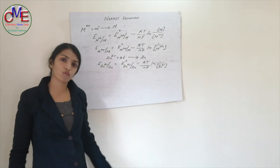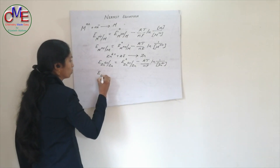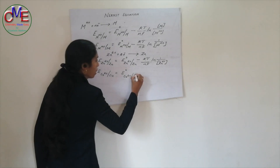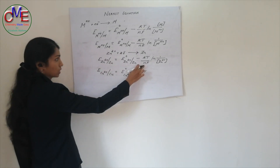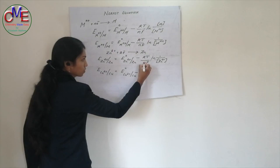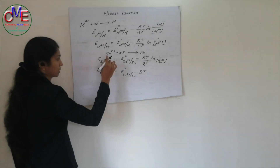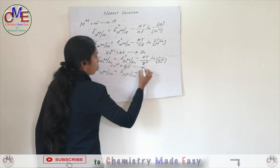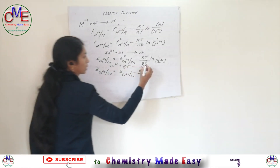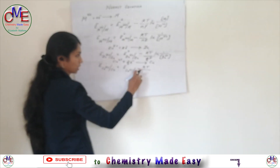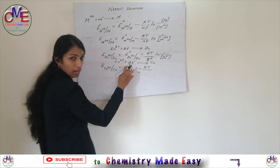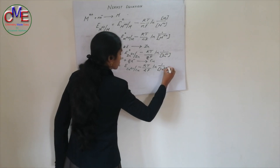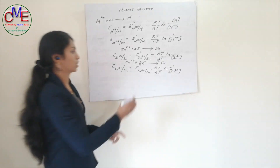For the copper electrode, the reduction reaction is Cu²⁺ + 2e⁻ → Cu, and here N is also 2. So the corresponding Nernst equation is: E(Cu²⁺/Cu) = E°(Cu²⁺/Cu) − (RT/2F) × ln[1/C(Cu²⁺)]. This is the Nernst equation of the copper electrode.